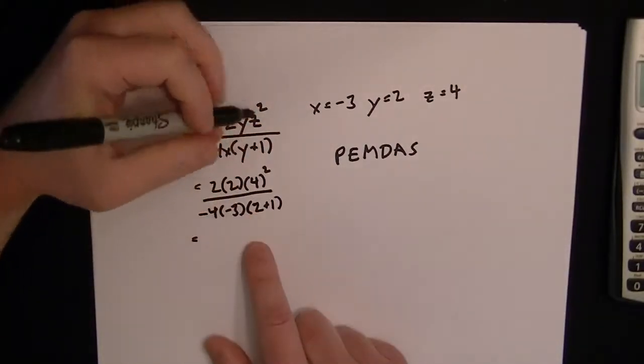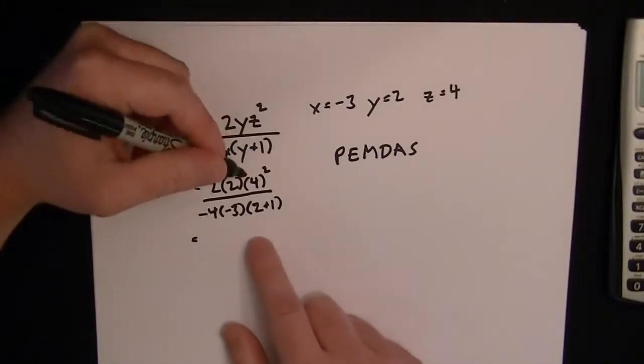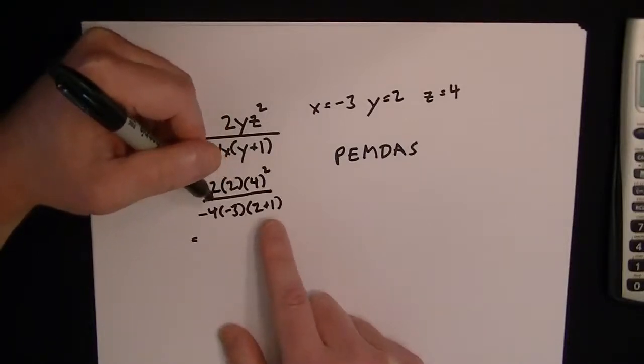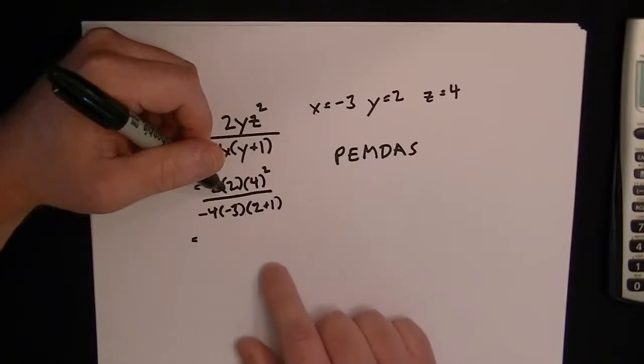Now you notice I put some parentheses in here, but that doesn't really change anything because we're just multiplying and dividing. So it doesn't matter because multiplication and division are, you know, you can do them in either order.